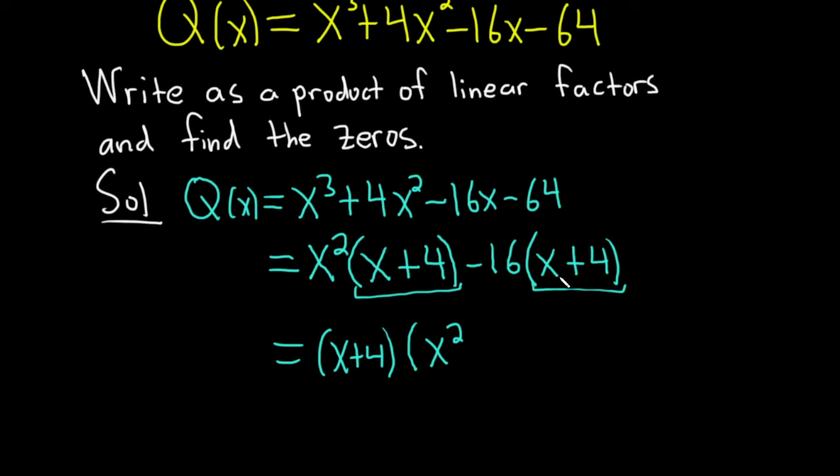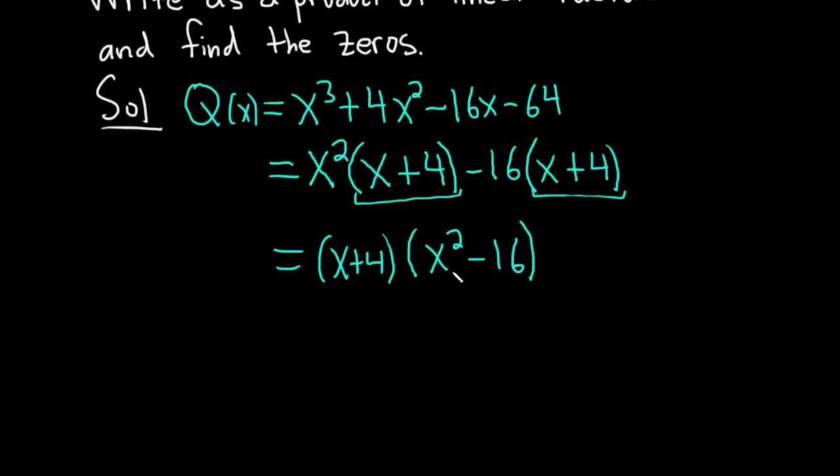And then here, we've already pulled out the x plus 4, so we just have a minus 16. And again, just a mental check: x plus 4 times minus 16 is exactly what we have here.